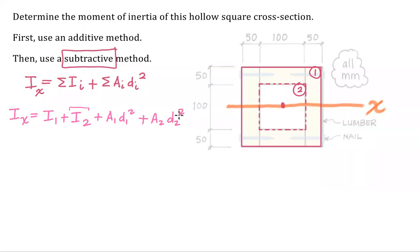And we're going to see more advantages because watch this. The center of shape two lies on the centroidal x axis. So d two is equal to zero.